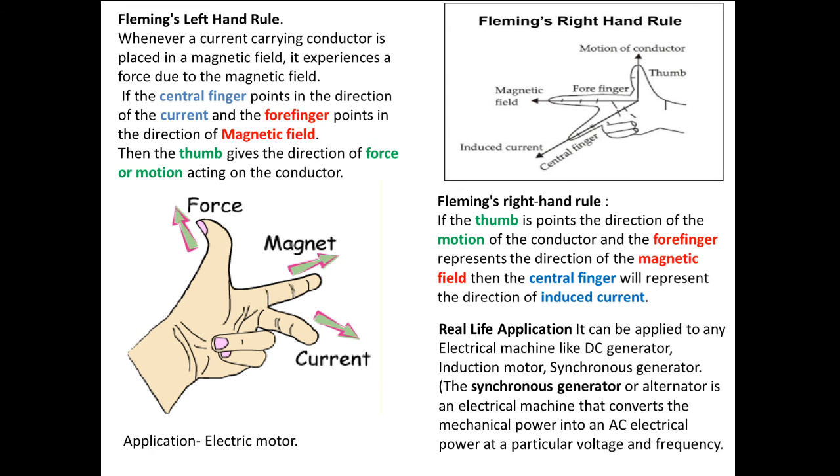Keep and point the three fingers of right hand perpendicular to each other. And we have to fix two fingers. Like the thumb here - thumb points the direction of the motion of the conductor. Forefinger represents the direction of magnetic field. Then central finger will point the induced current.